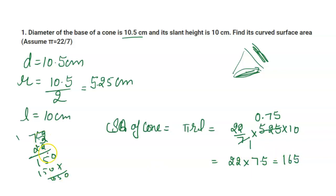So here is 165. The decimal cancels out. So the answer is 165 centimeter square.